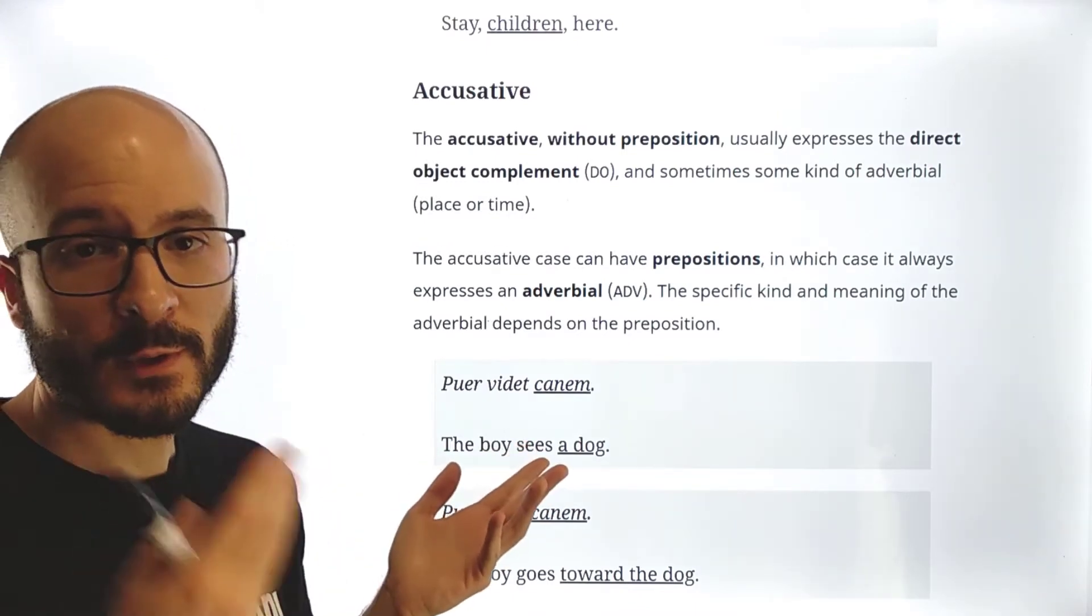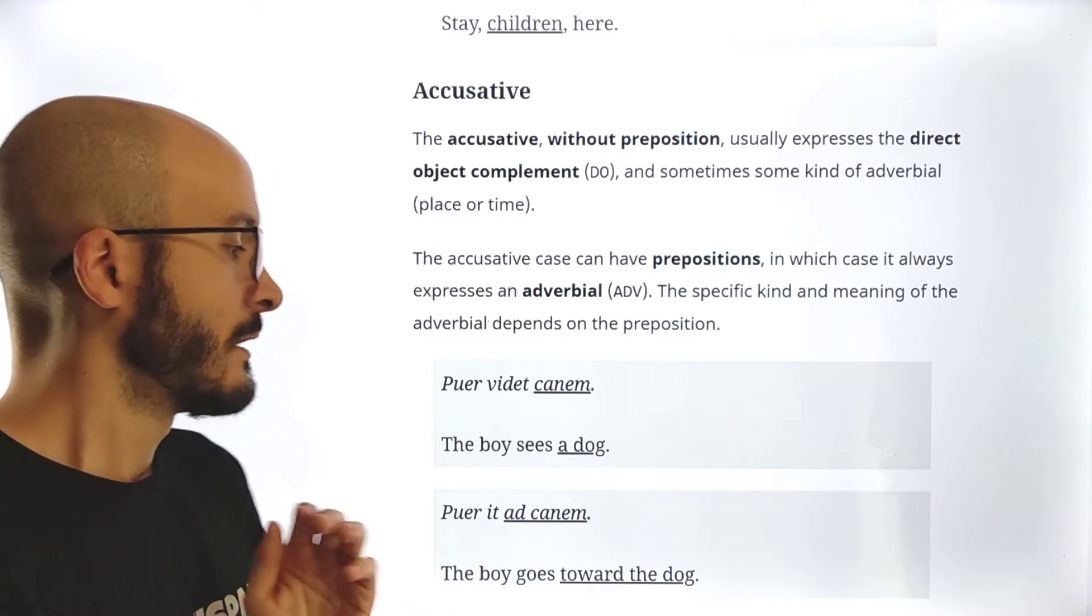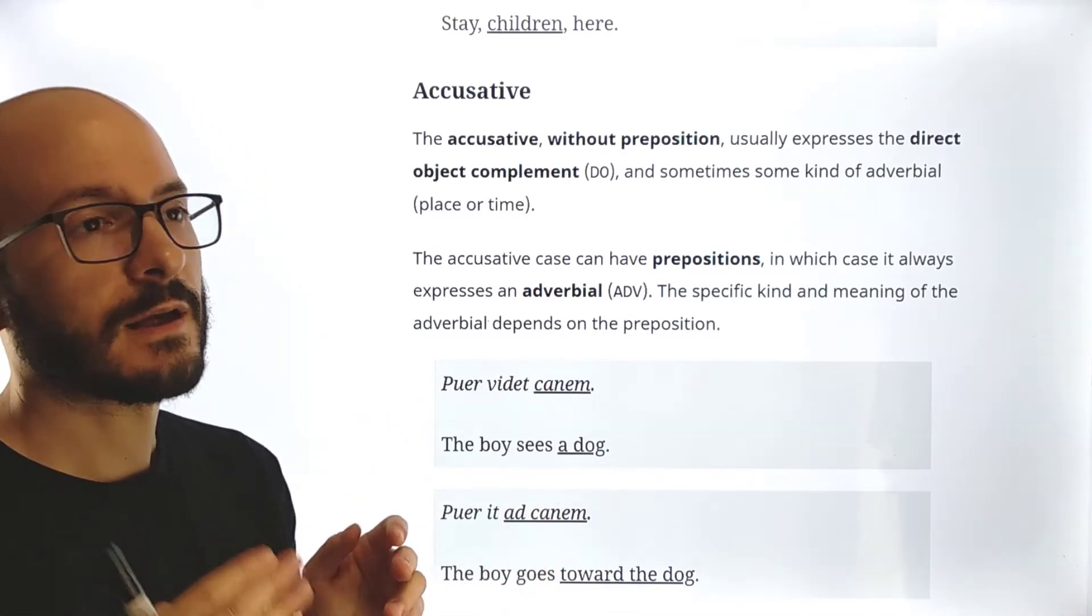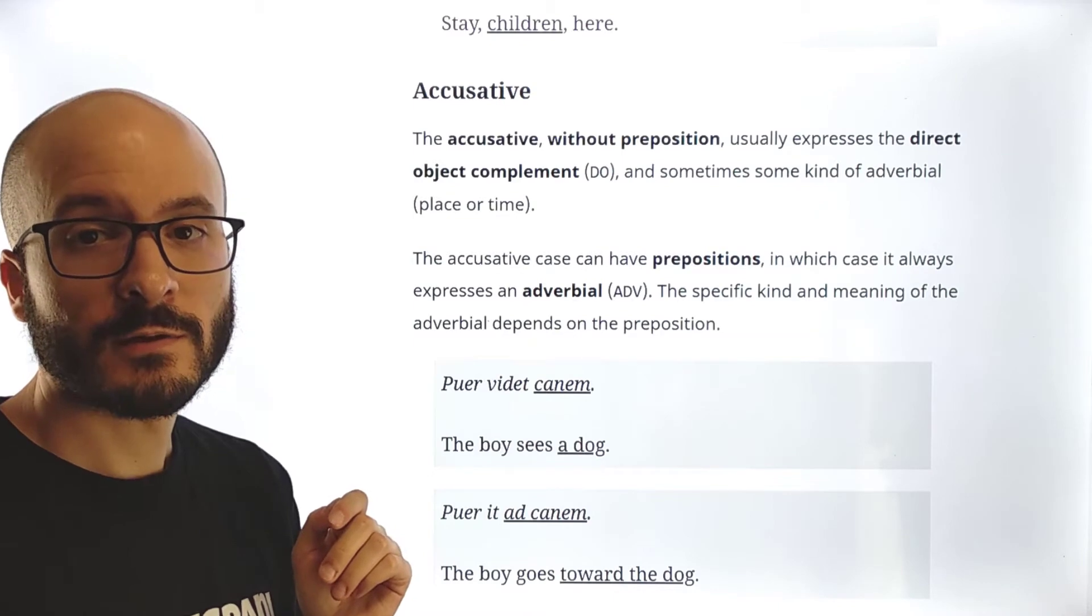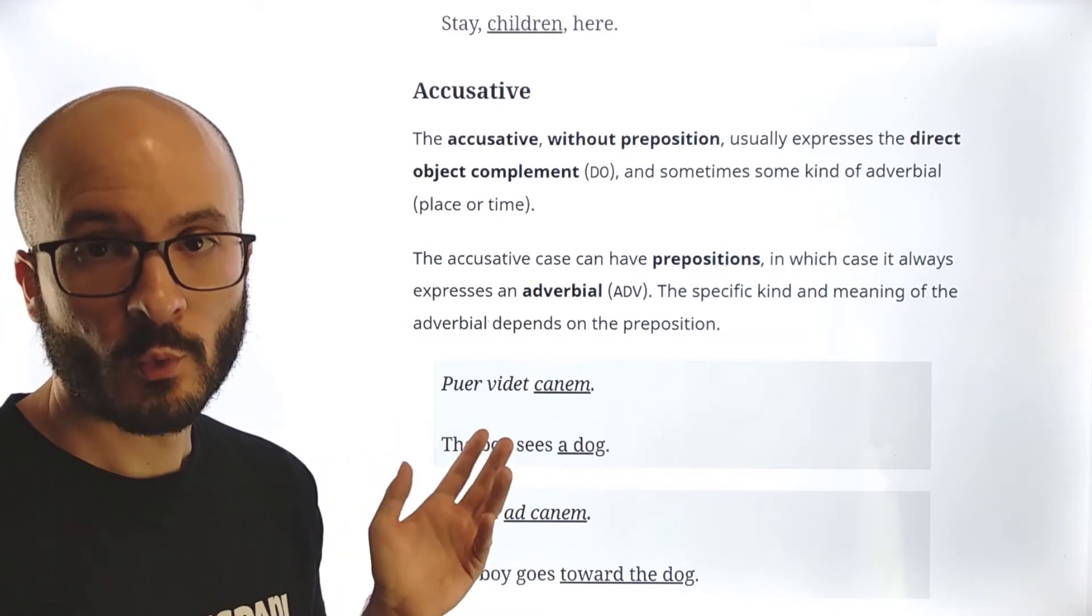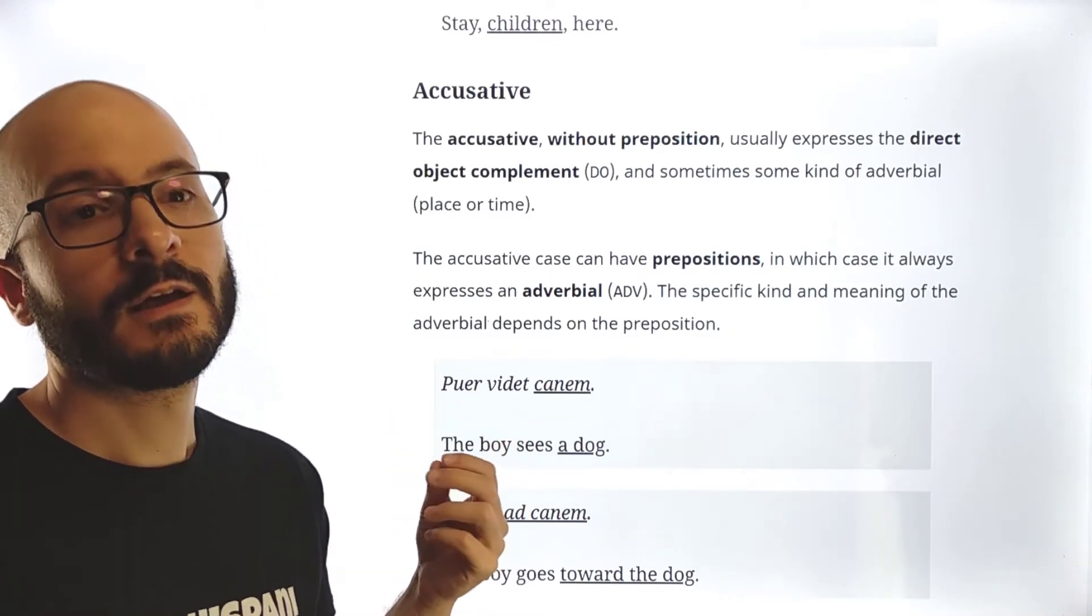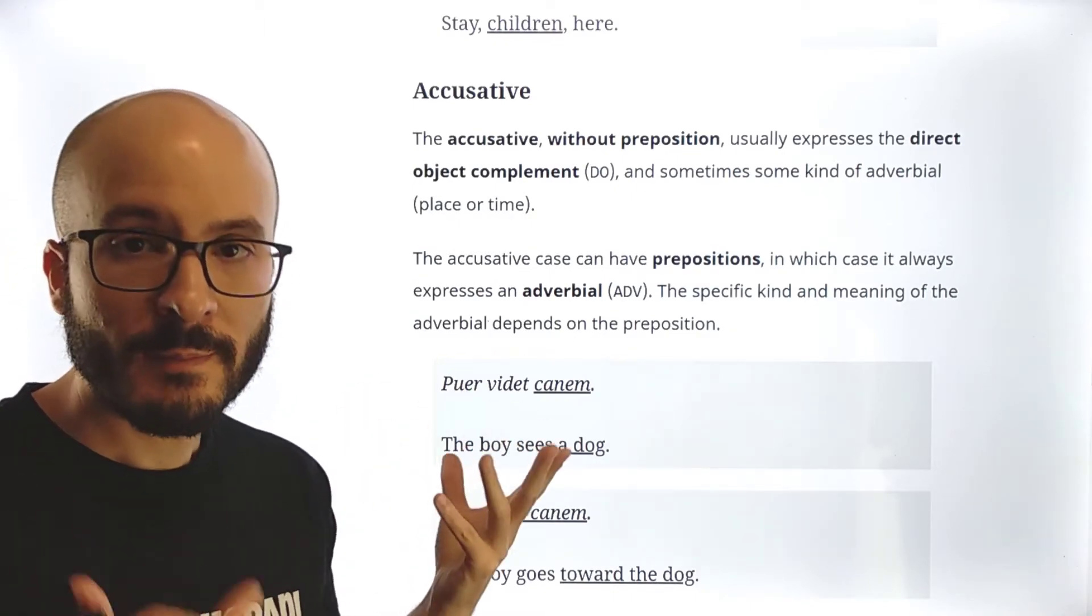And now here we have the same kanem, accusative, but with a preposition which means direction, which means the boy goes toward the dog. As I said, depending on the preposition, this adverbial with accusative can be a direction, like here, it can be the purpose of the action. It will also be the cause, the reason, etc. We will be learning with the practice, we will be learning the prepositions, what they mean, etc.